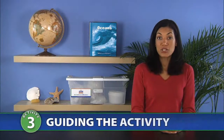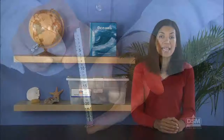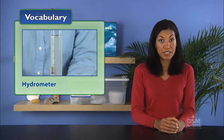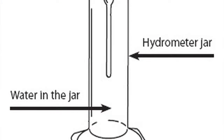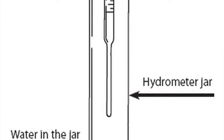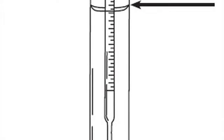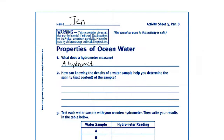To begin Session 2, hold up the pencil hydrometer you have assembled. Explain that a hydrometer is a device that measures the density of a liquid. A scientific hydrometer consists of a glass tube with a weighted bulb at the bottom. The hydrometer is placed in a liquid so that it floats upright — the higher it floats in the liquid, the denser the liquid is said to be. Distribute Activity Sheet 3, Part B, and tell students to answer Question 1.